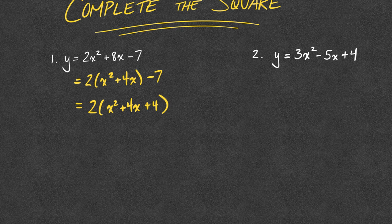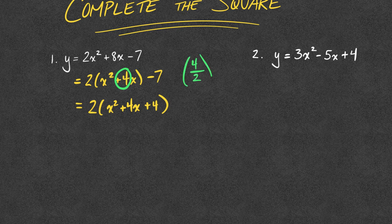So, how did I get that? Well, what I did was I took half of the coefficient on my x, which was four, take half of it, and then square it. So, I take half of my four is two, square it is four.